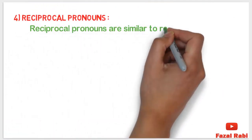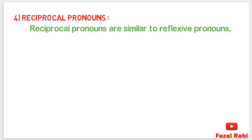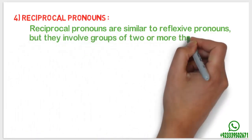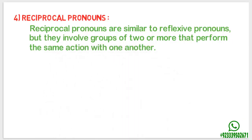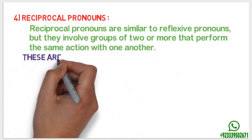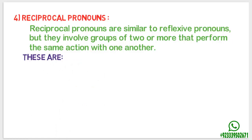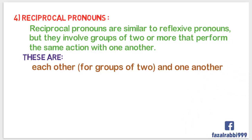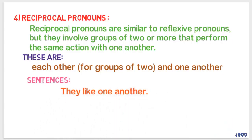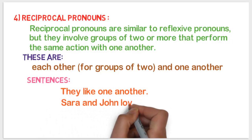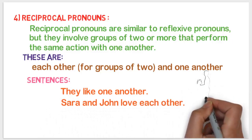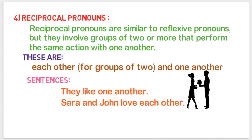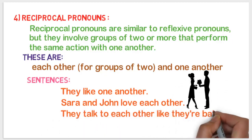Number four: reciprocal pronouns. Reciprocal pronouns are similar to reflexive pronouns, but they involve groups of two or more that perform the same action with one another. These are 'each other' and 'one another.' For example: 'They like one another.' 'Sarah and John love each other.' 'They talk to each other like they are babies.'